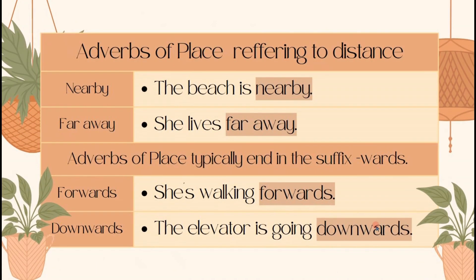We have 'nearby' and 'far away.' An example of 'nearby' is: the beach is nearby. Our object here is 'the beach' and our adverb of place is 'nearby.' Another example: she lives far away. Adverbs of place can also typically end in the suffix 'wards' — for example, 'forwards' and 'downwards.'